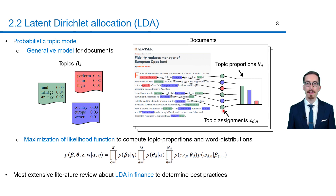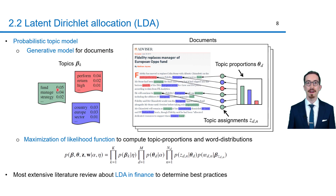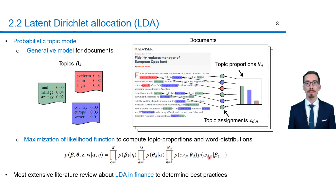Finally, to create the words, a topic is first assigned to each word position based on the topic proportions. This is the reason why there are more green coins than red coins. And then for each word position, the specific word is drawn from the assigned topic. The probability of creating these words is quantified by these last terms in this equation. The per-topic word distributions and the per-document topic proportions are computed by maximizing this probability for the analyzed corpus. So this explains how topics can be identified and how documents can be clustered.